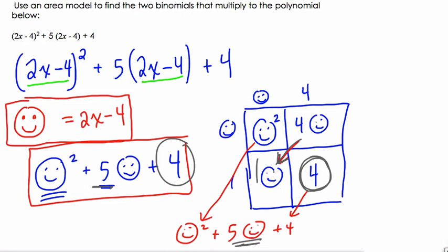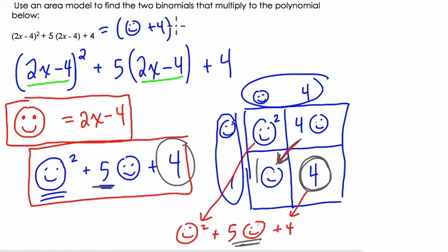Anyway, the answer is actually right in front of us now. We're trying to find these two binomials, smiley face plus 4 and smiley face plus 1. Now that can't, I mean, once you substitute, I mean, you probably wouldn't use a smiley face, but you can use whatever you want. It's not really typical to leave your answer in this form.